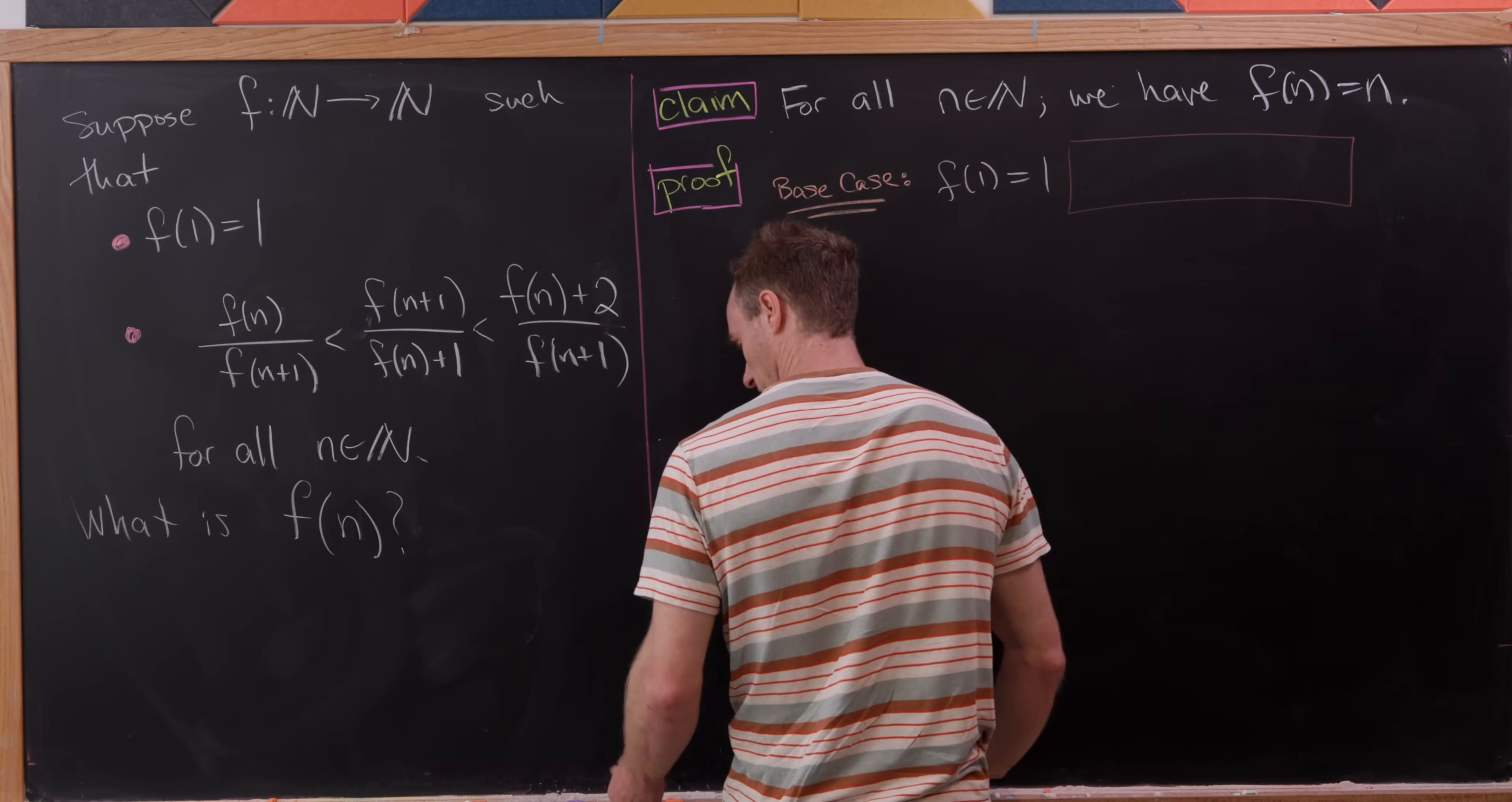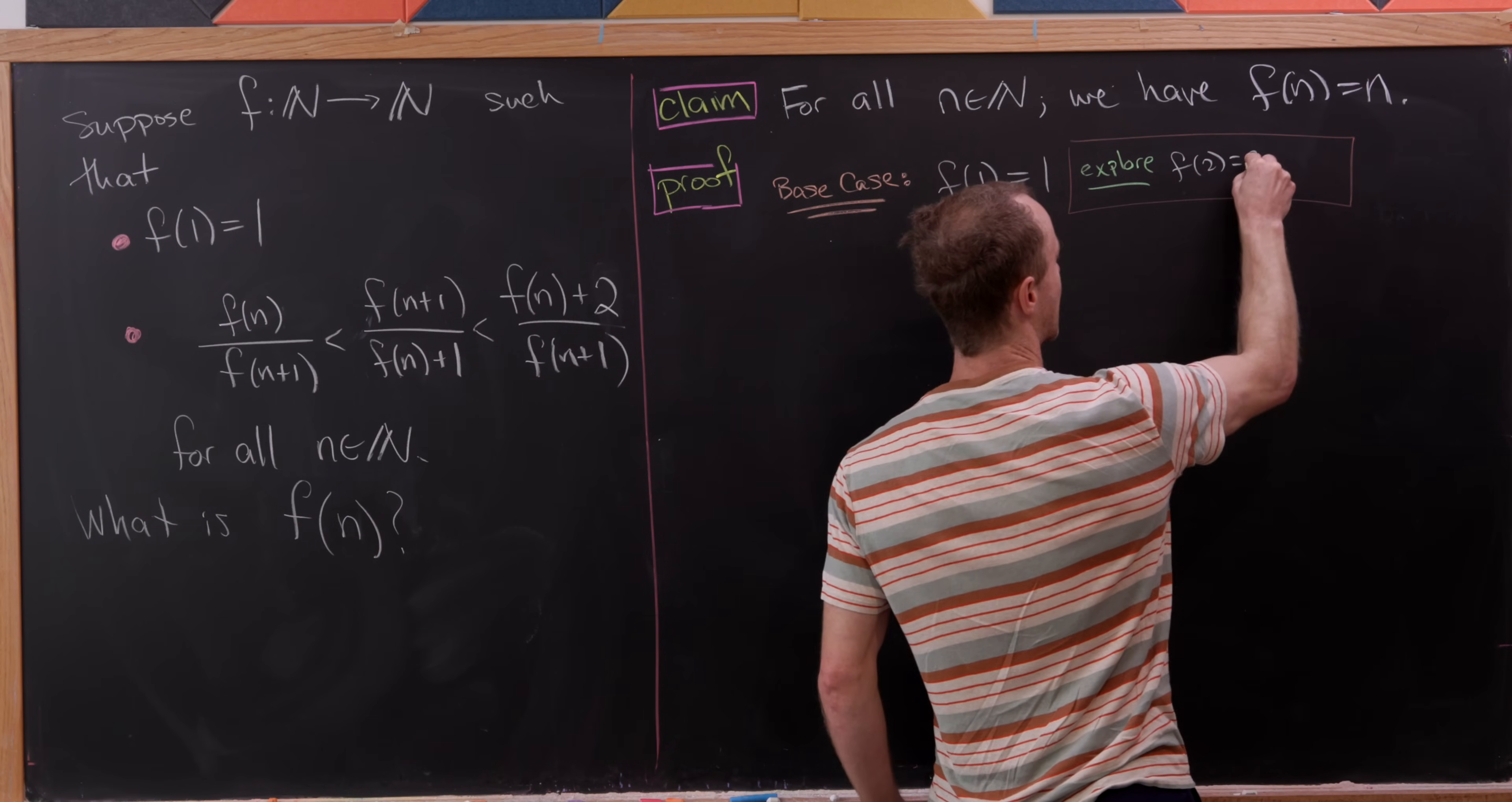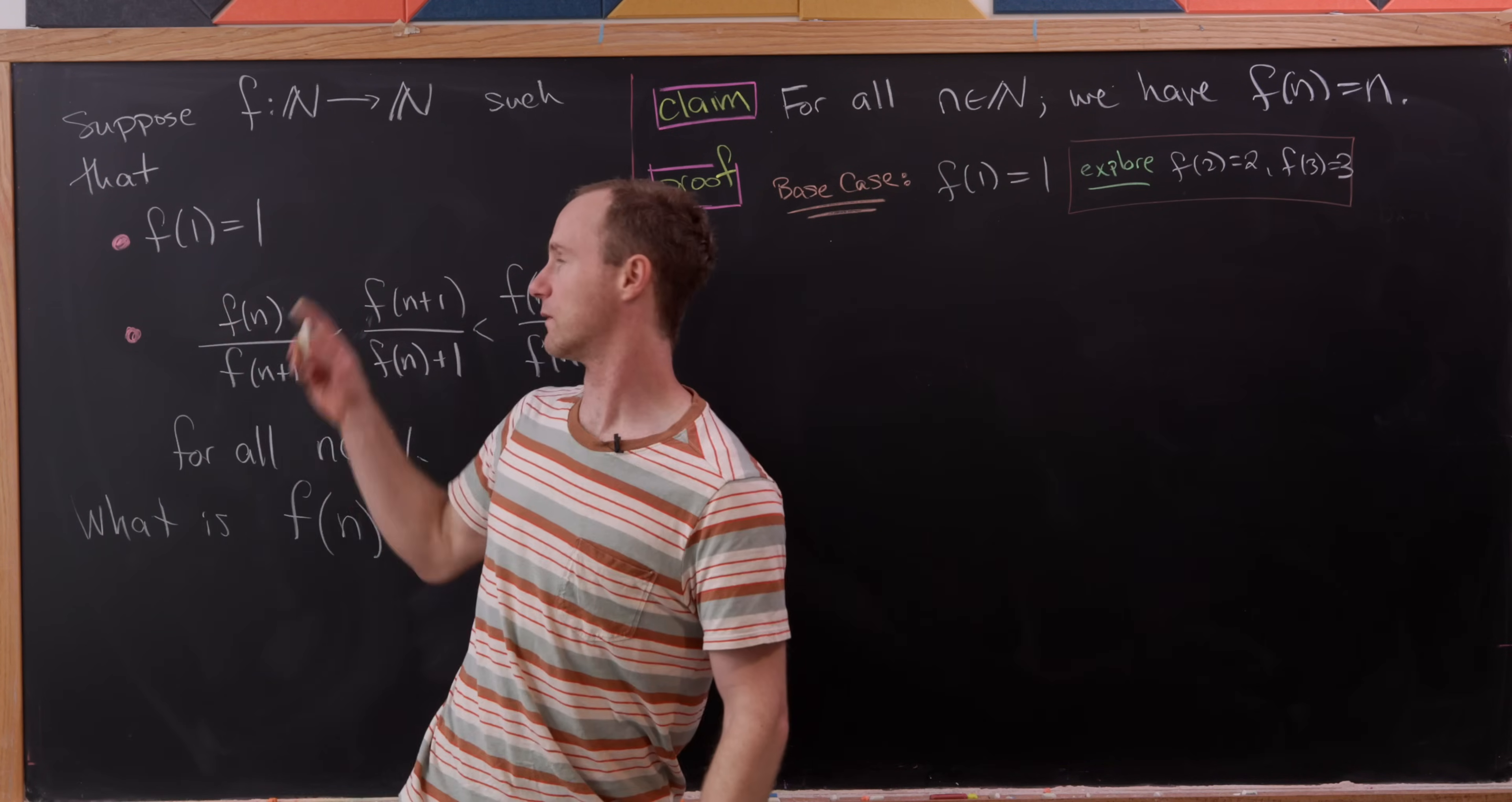And then let's also observe that during our exploration we saw that f of two was equal to two and f of three was equal to three. So in fact essentially we have three base cases even though we only need the one that was given to us.